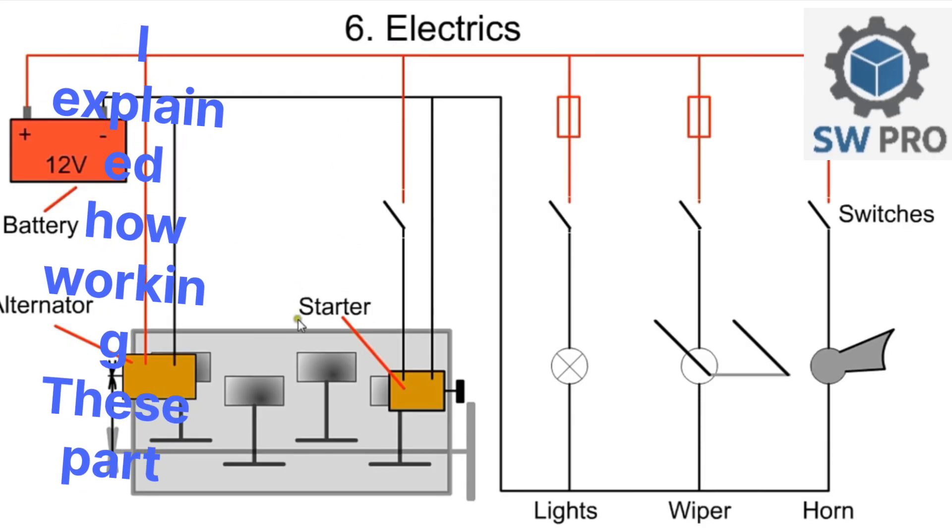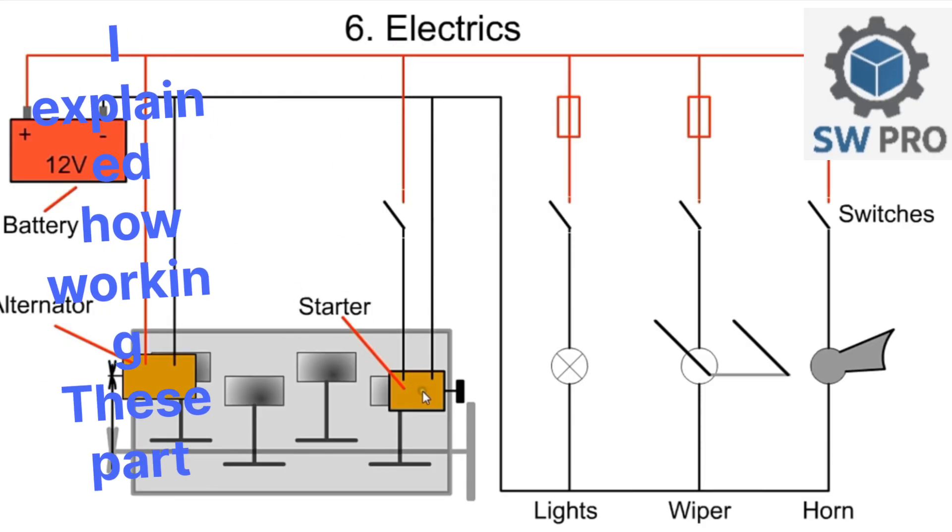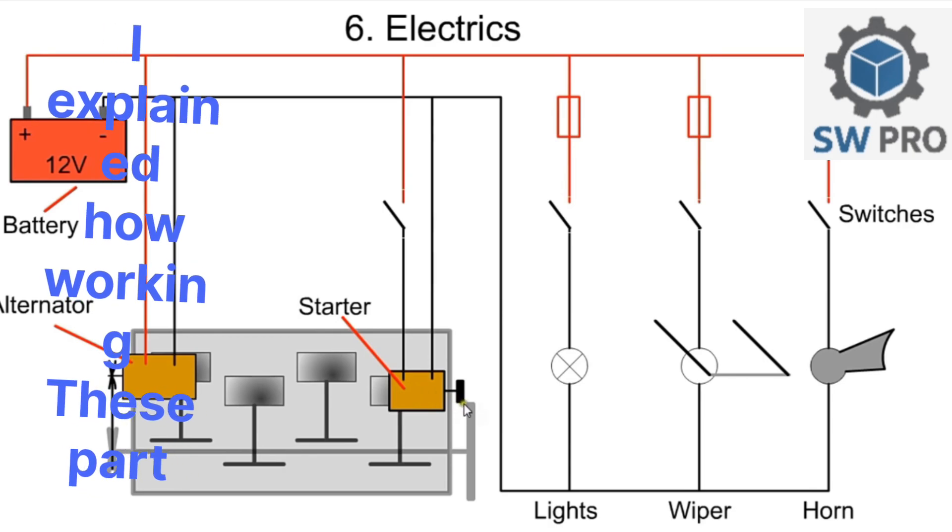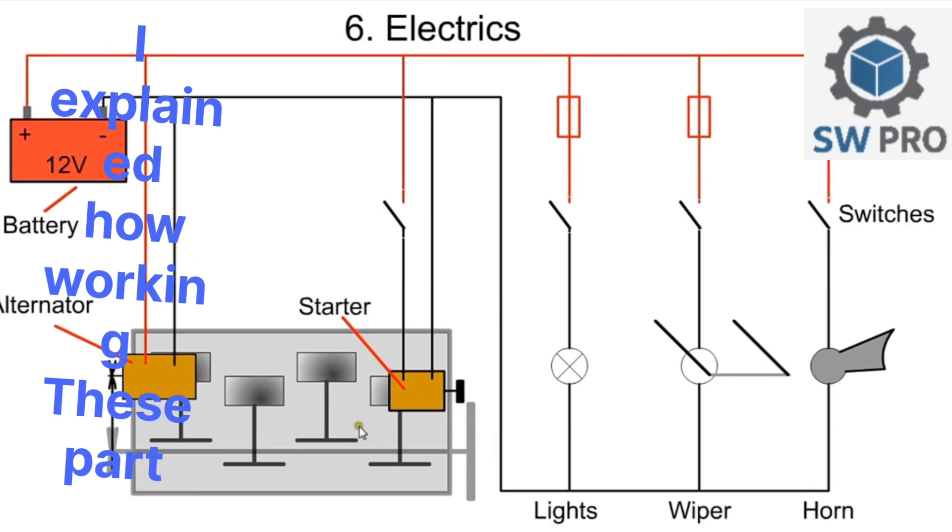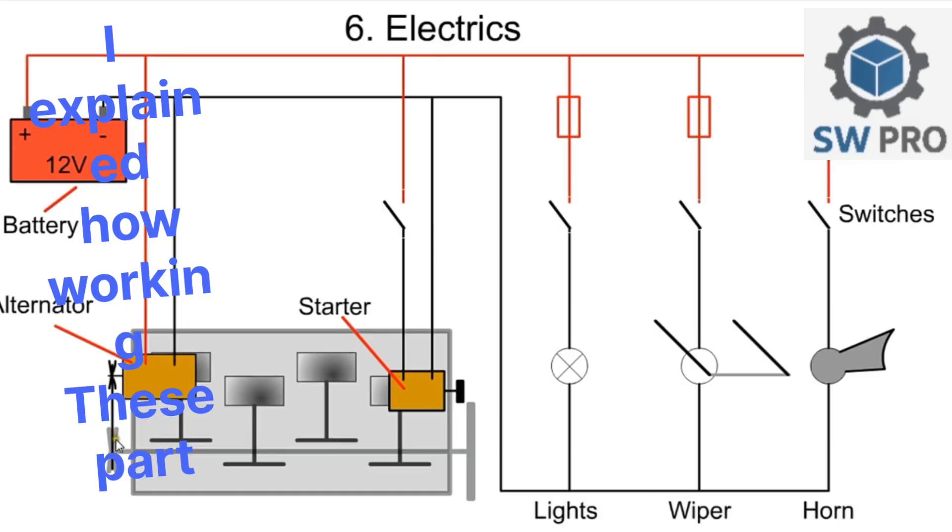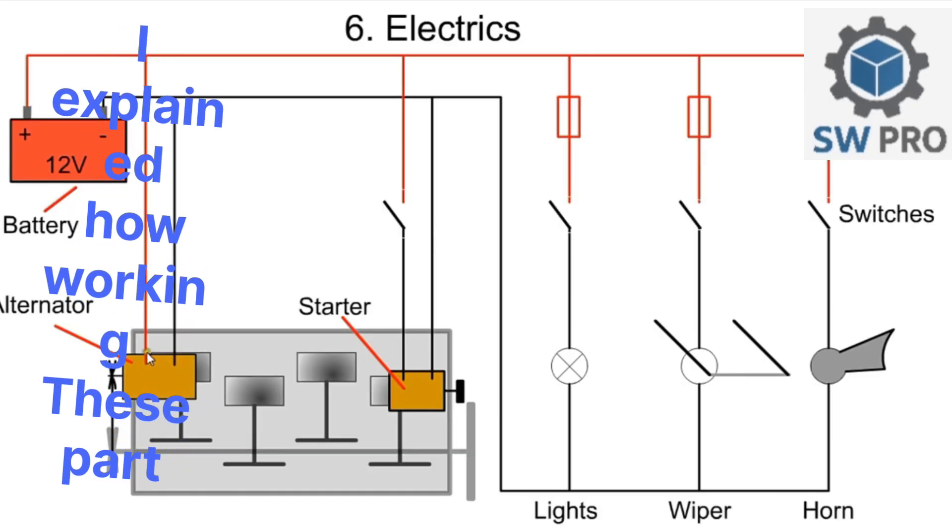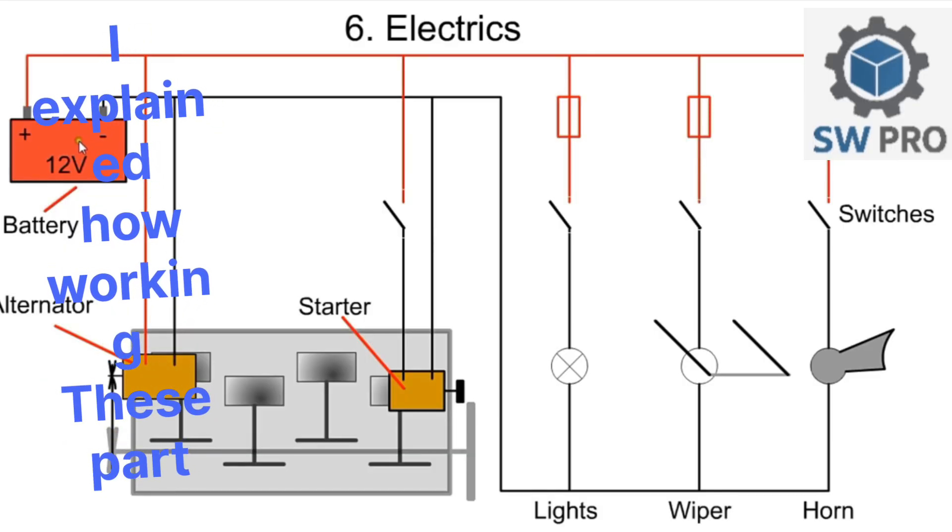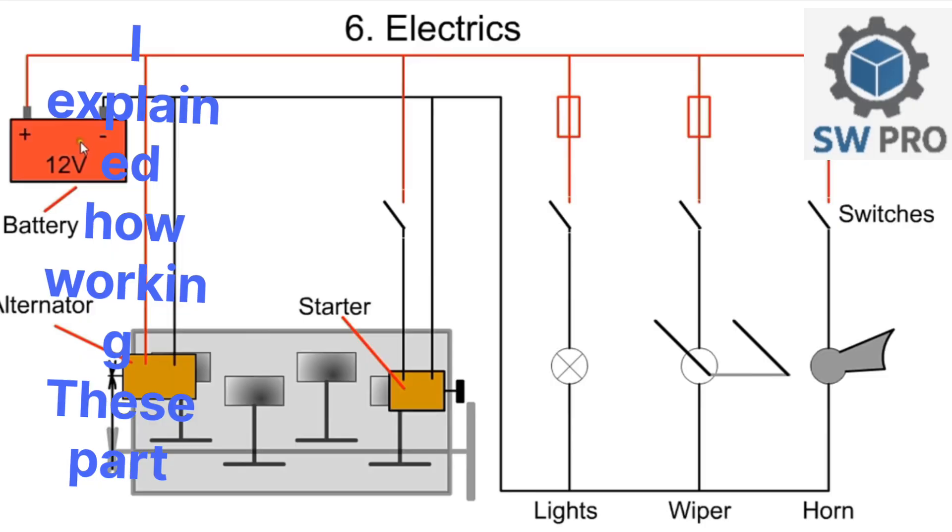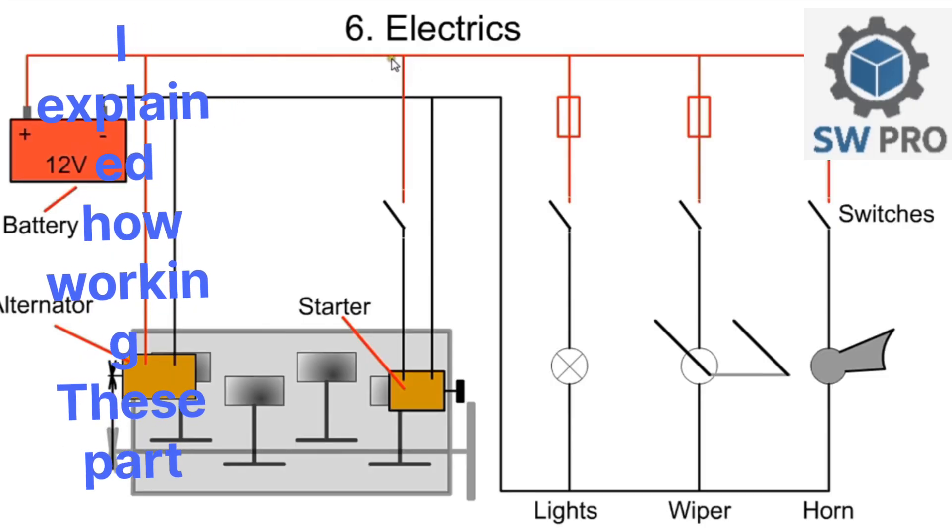Chapter six: electrics. To start the car, the battery provides power to the electric motor, which starts the engine rotating via a connection to the flywheel. When the engine is running, the alternator, driven by the crankshaft, ensures that the battery is maintained in a fully charged state.